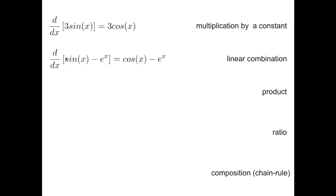For a linear combination, the derivative of this subtraction between sine and the exponential is the subtraction of the respective derivatives, cosine and the exponential, with the same sign.